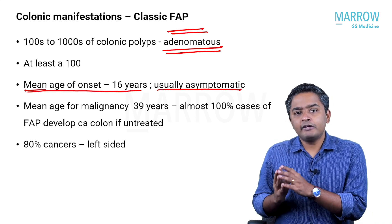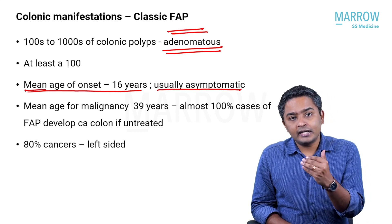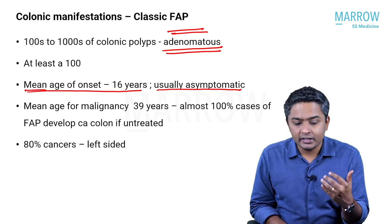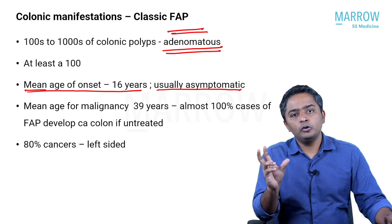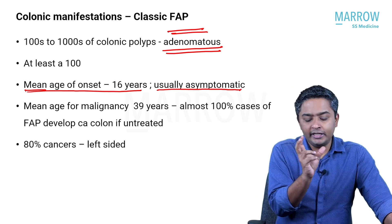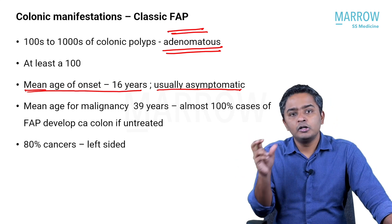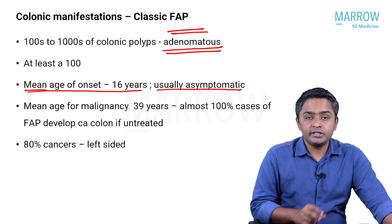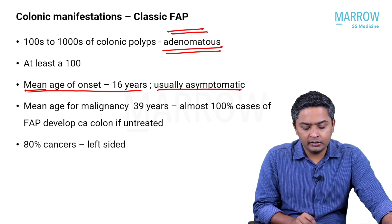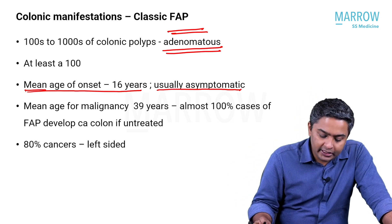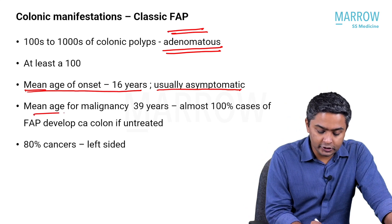If you are already suspecting FAP in a family, at 16 years is the average age of onset of polyps, and 39 years is the average age of malignancy. There is a good window of 23 years between the age of onset of polyposis and the age of malignancy diagnosis, where you can actually try and intervene and save the patient, or at least reduce the chances of malignancy.